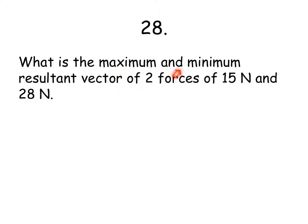Whenever you are asked for a maximum and minimum resultant vector of two forces, or any minimum and maximum resultant, you're always going to take a look at what would happen if I added the two values together. So, for example, 15 plus 28, and if I subtracted them, 28 minus 15. And you're going to land up with answers of 43 and 13 newtons.